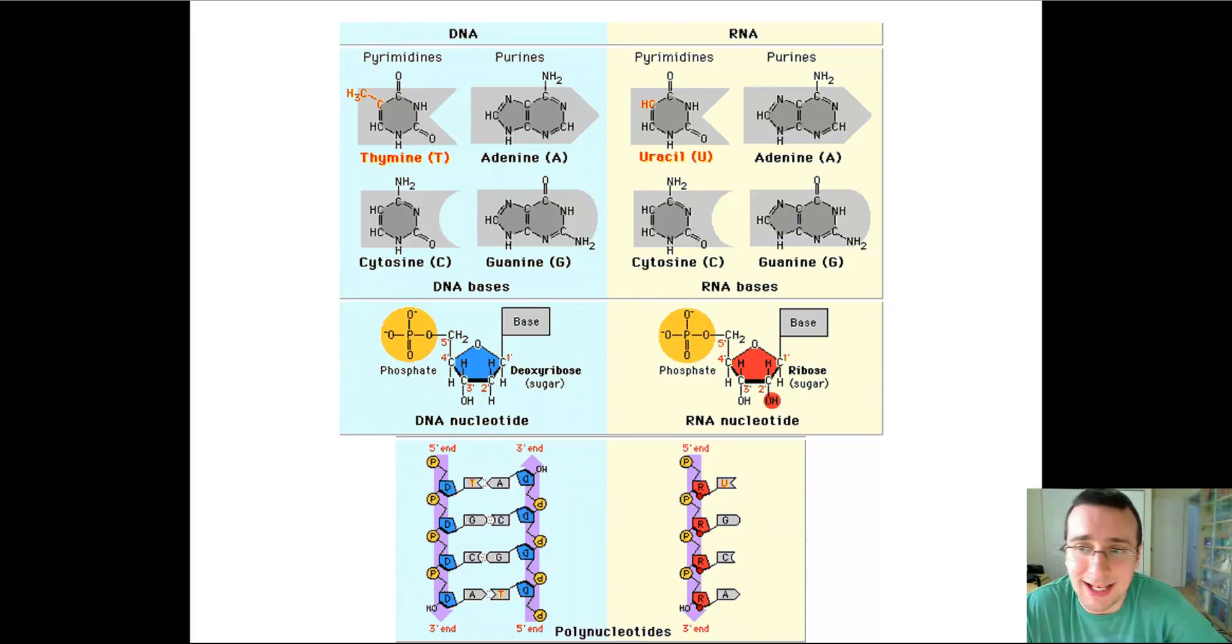Also, notice that although DNA is double-stranded, RNA is single-stranded, and DNA will have every single gene in your body. It's huge and packed into chromosomes. RNA is going to be small. It will have only a copy of one gene, and it's a single-strand molecule that doesn't have the same kind of structure that DNA has in chromosomes.